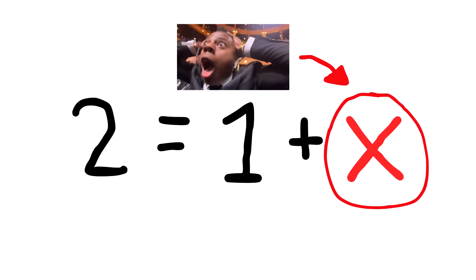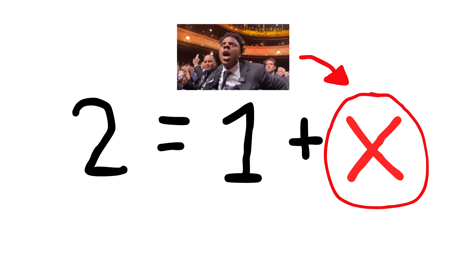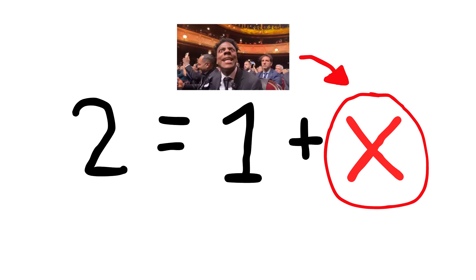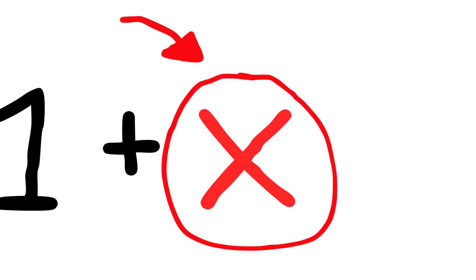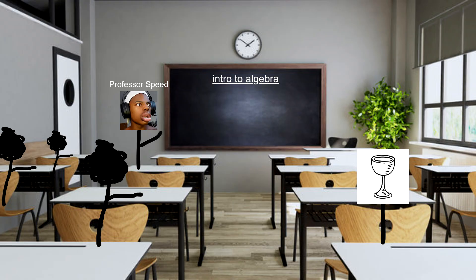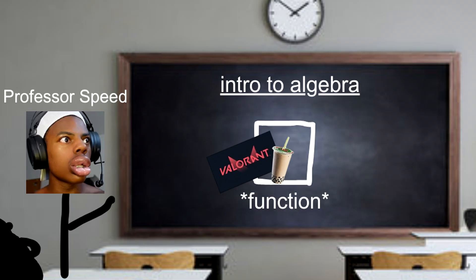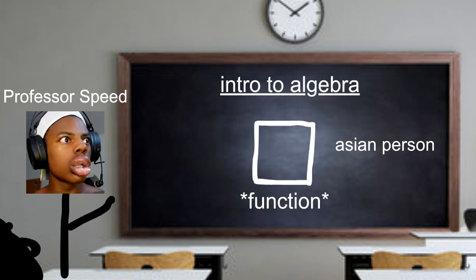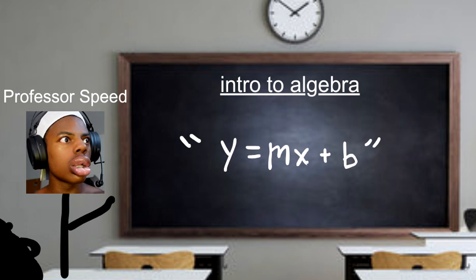Now, algebra is finding the unknown of something, and in mathematics, it's represented most commonly with x, which is true because where the f is my x? You're also indirectly introduced to the function, where one input should derive one output, and this is most often seen in the form, y is equal to mx plus b, and later on, y can be interchanged with f of x.